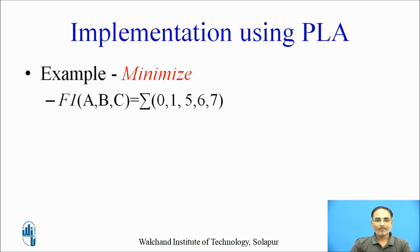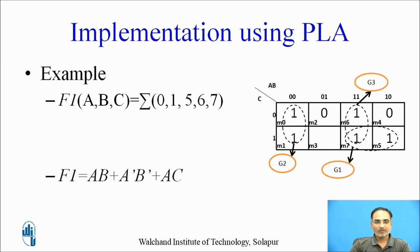Let us implement an example. Minimize this expression: F1 is a function of A, B, C — a three-variable function with minterms 0, 1, 5, 6, and 7. You can use any method for minimization. Using a K-map and grouping the minterms, the minimized function is F1 = AB + A'B' + AC. Group 1 gives AB, group 2 gives A'B', and group 3 gives AC.